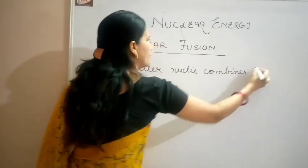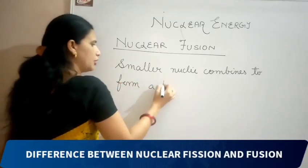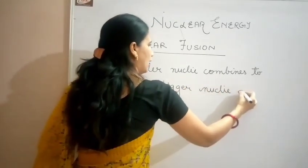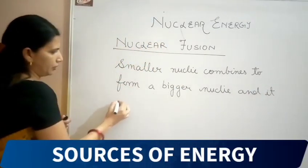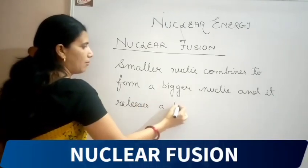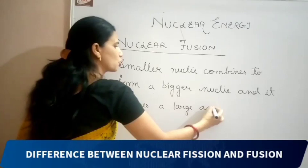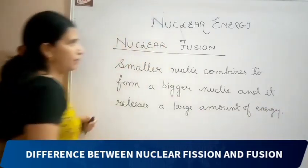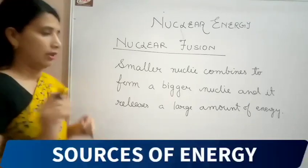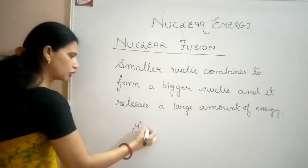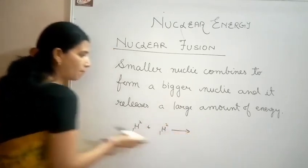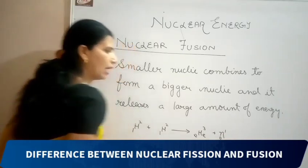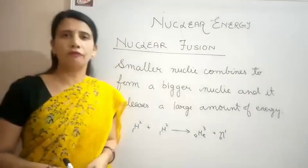Smaller nuclei combine to form a bigger nucleus and it releases a large amount of energy. This reaction is known as a nuclear fusion reaction. An example of nuclear fusion reaction: this is deuterium, 1H2. When two deuterium nuclei combine, they form 2He3 plus one neutron and a lot of energy. This is the example of nuclear fusion reaction.